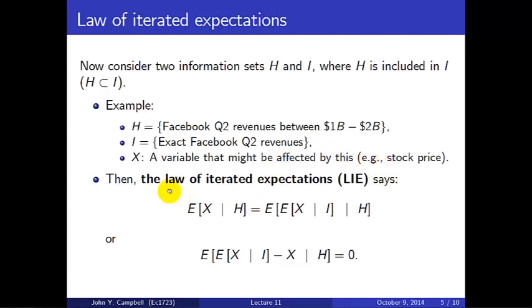So with these definitions, the law of iterated expectations, or LIE, says the following. Let's start with the first line. The expectation of x given h is the same as the expectation given h of the expectation of x given i. In other words, given the smaller information set h, you're going to come up with the same answer whether you try to predict x, the ultimate variable of interest, or whether you simply try to predict the forecast of x, the rational forecast of x given the superior information set i. So predicting the future outcome is the same as predicting your future forecast when you have better information. Those two are really the same thing if you're forecasting rationally.